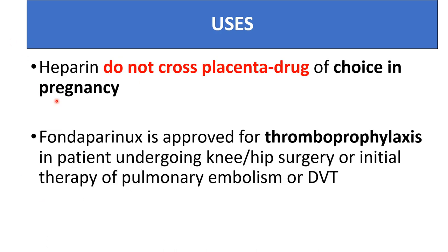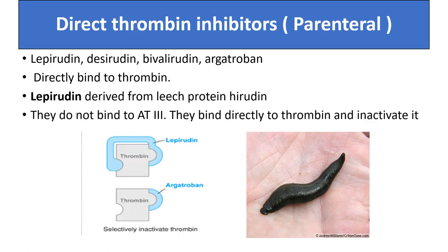Fondaparinux is approved for thromboprophylaxis in patients undergoing knee and hip replacement surgery, or as initial therapy for pulmonary embolism or deep vein thrombosis. Direct thrombin inhibitors include lepirudin, desirudin, bivalirudin, and argatroban.